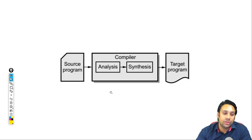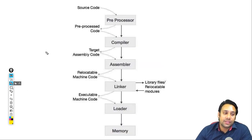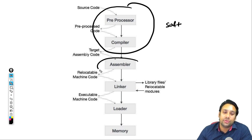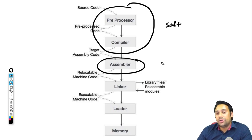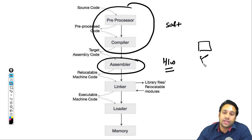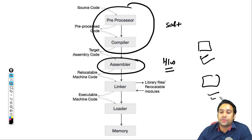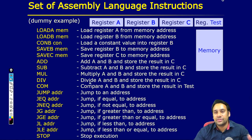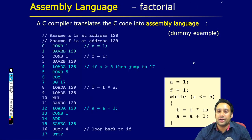जो आपका C compiler है, C compiler translates this program into this kind of assembly code. तो जो आपका C compiler है वो इस program को इस तरह के assembly code के अंदर translate करता है. In this assembly code we have used all of these instructions. So basically, whatever assembly code you have, that assembly code will be dependent on your computer architecture.